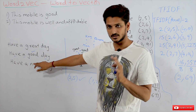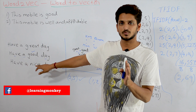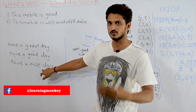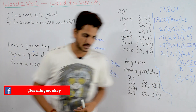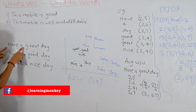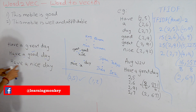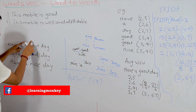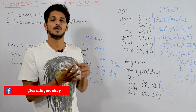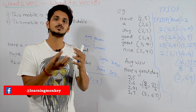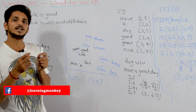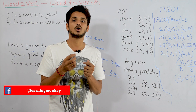What Word2Vec will do is take the entire data corpus and identify words that are similar to 'good' based on the context words. For example, 'great' is also in the same context 'have a day,' and 'nice' is also in the same context 'have a day.' So these three words — good, great, nice — are considered similar words in Word2Vec based on their context words.